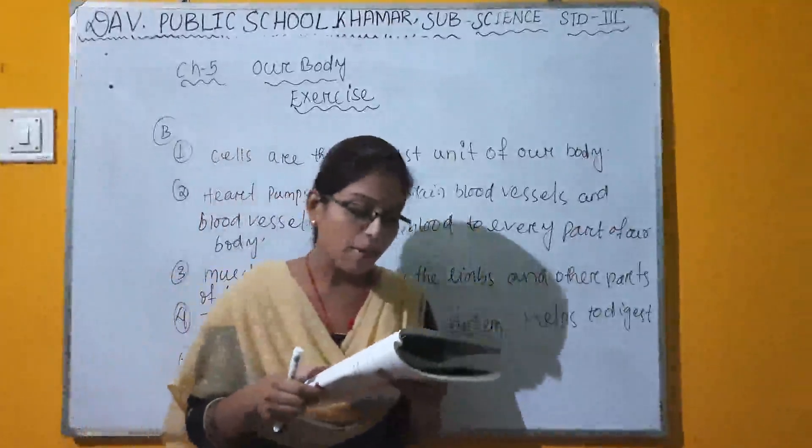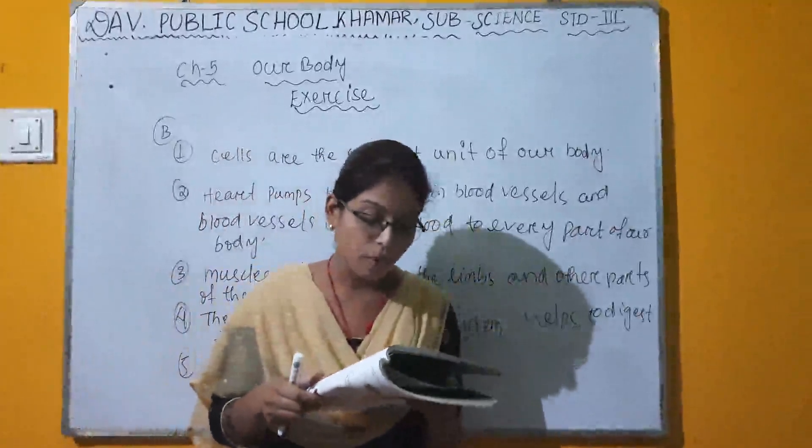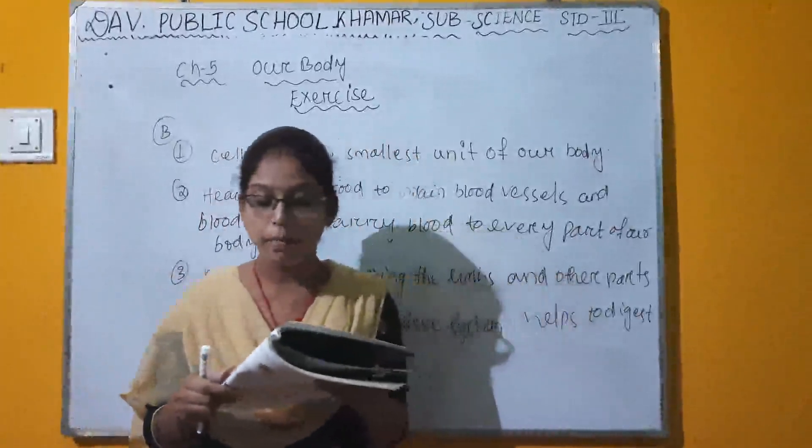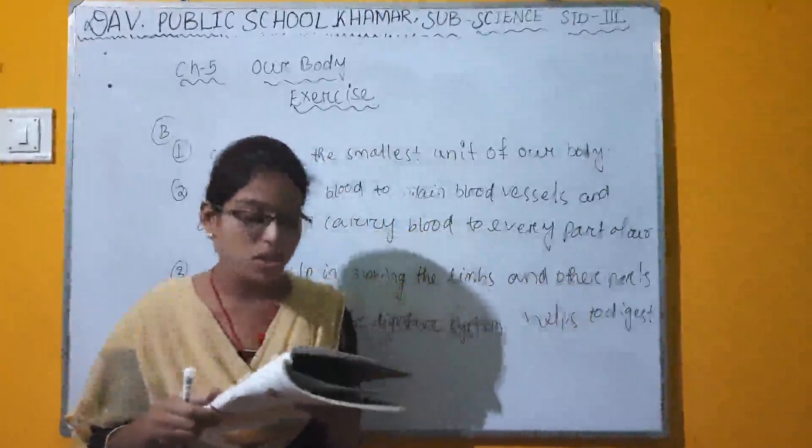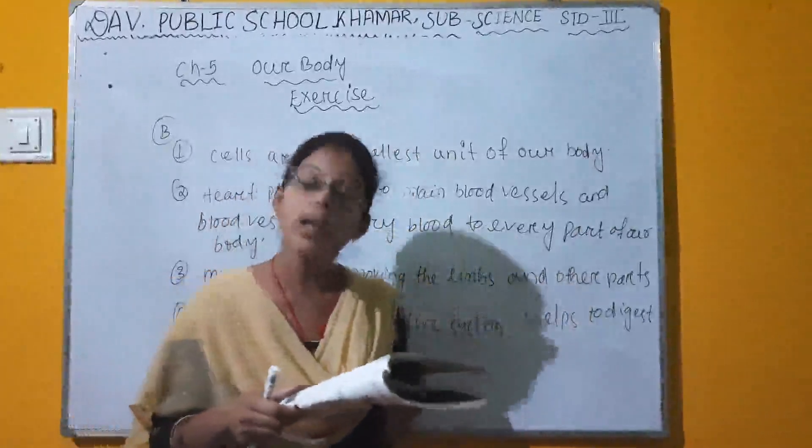The heart absorbs blood from the small intestine and passes it to each part of the body.